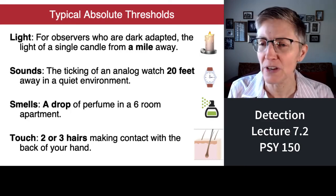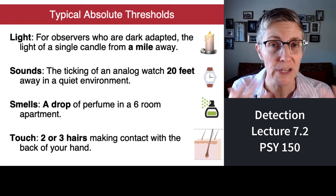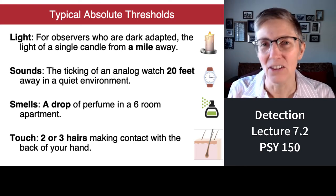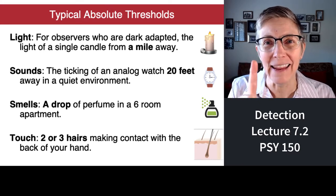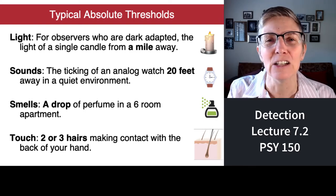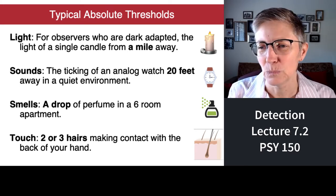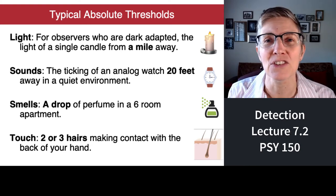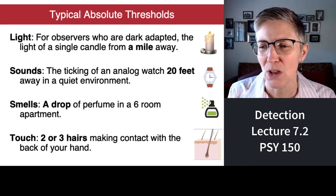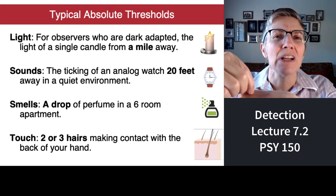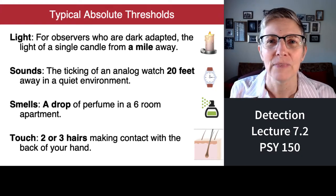What are some typical absolute thresholds? For sighted people, if you've been in the dark for a while, you can detect the light of one candle flame from a mile away. For sound, you can detect the ticking of an old-fashioned analog clock from 20 feet — about 6 to 7 meters — away. For smell, if you live in an apartment with six rooms, you can smell one drop of perfume. For touch, on the back of the hand, pressing two or three hairs can be felt 50% of the time; one hair cannot.